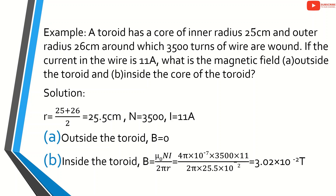Sub-question B: what is the magnetic field inside the core of the toroid? Inside the core of the toroid, magnetic field B equals mu0 n i, that is mu0 N i divided by 2pi r. Substituting: mu0 is 4pi × 10 raise to minus 7, N is 3500, i is 11, divided by 2pi into 25.5 × 10 raise to minus 2. That is equal to 3.02 × 10 raise to minus 2 tesla. Thanks for watching.